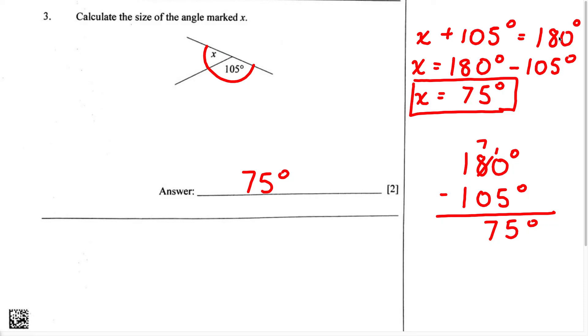The next step was to make X the subject of this equation. In order to do this, we had to move 105 degrees over to the next side. And because we had a plus sign, it now becomes a minus sign. Once you subtract this, you're going to end up with the answer 75 degrees.